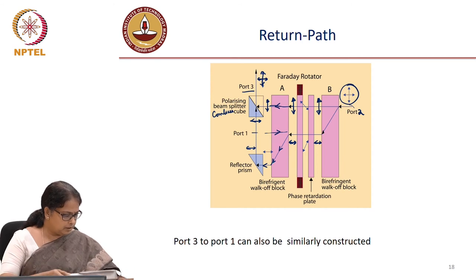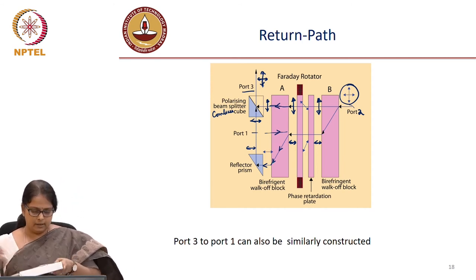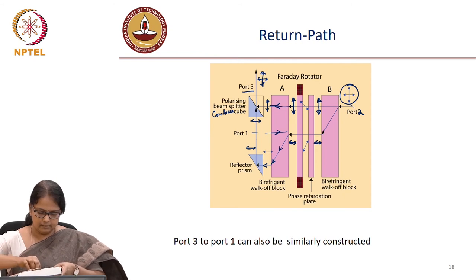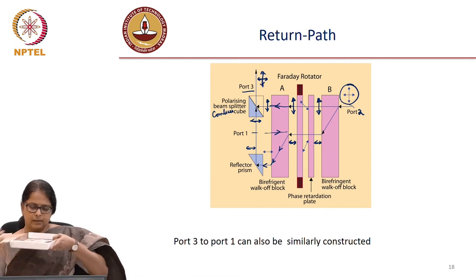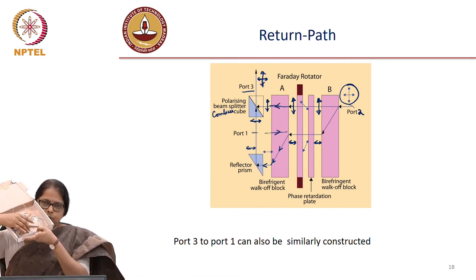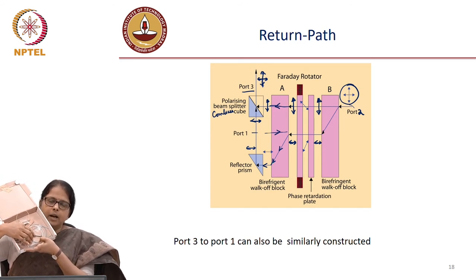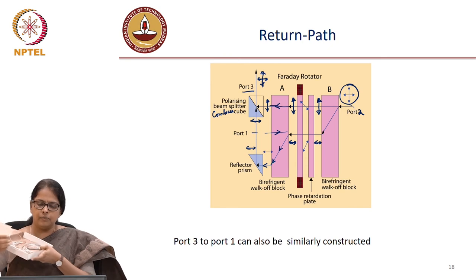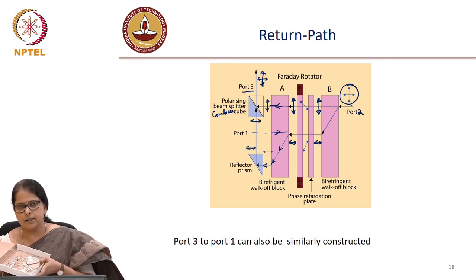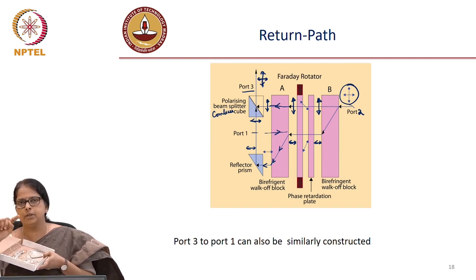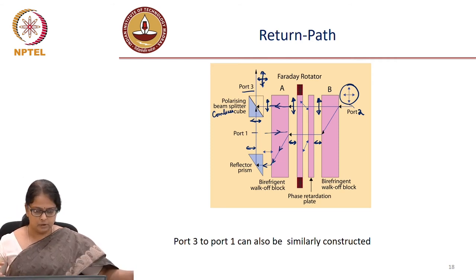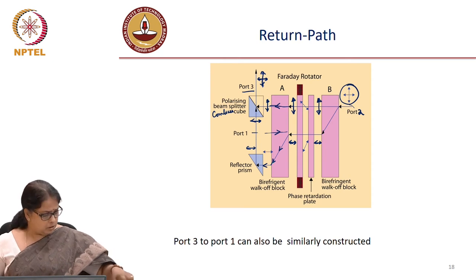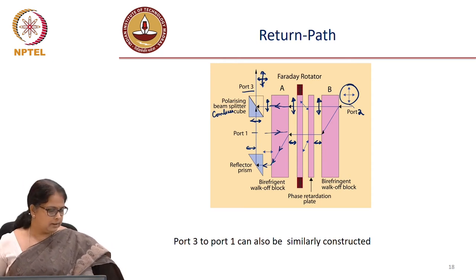To give you a feel of the size, the circulator is kept in a hermetically sealed package of this size. Inside you have two sets of Faraday rotator, phase retardation plates, and birefringent walk-off blocks — one which takes care of transmission from port 1 to 2 and port 2 to 3, and the other which takes care of port 3 to port 1. So we now know how to control the path of light as well.